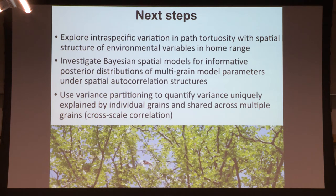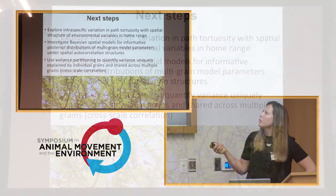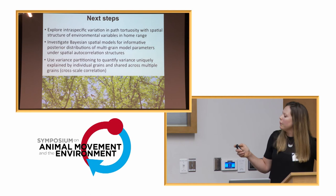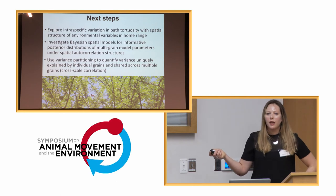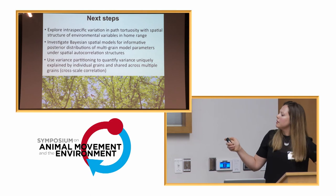Next steps are to increase sample size for red-billed hornbills to test the disentangling of scale dependence more thoroughly, and also to investigate Bayesian spatial models as opposed to generalized linear mixed models with an autocorrelation structure in the random effect, which is a somewhat simplistic approach. We will also test cross-scale correlation to see which spatial grains are providing the most unique explanatory power for the scale dependence question.